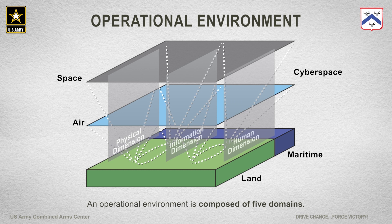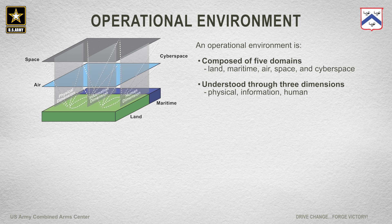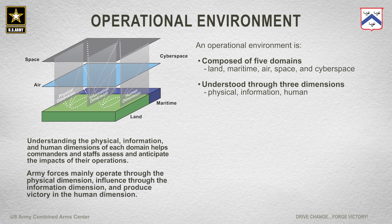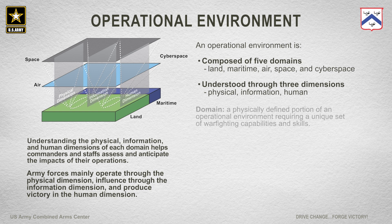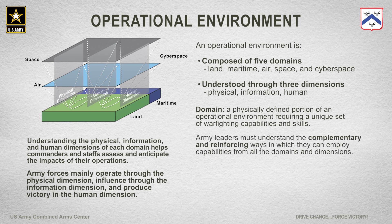Each of the five physical domains has three dimensions: physical, human, and information. That's where we try to affect change when we conduct operations — achieving outcomes in those dimensions favorable to the U.S. joint force. We defined domains for the first time in this doctrine. When you understand what a domain is, you understand the focus of each service: Army is land, Navy is maritime, Air Force is air. Each service is inherently multi-domain, and that overlap reflects the complementary and reinforcing approach that has been the secret sauce of the U.S. joint force.